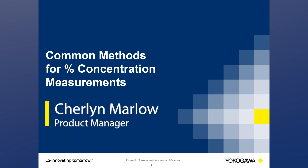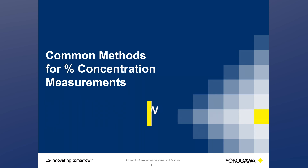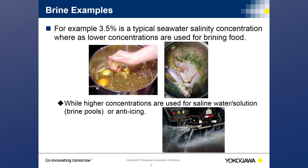Today we're going to discuss common methods for measuring percent concentration. Let's look at one example: the production of brine solution, which is used for many different purposes. Brine solution can be used anywhere from your household to prepare food before cooking, or within industrial processes such as food and beverage manufacturing, refineries, textile dyeing houses, secondary coolants and refrigeration systems, and chemical plants.